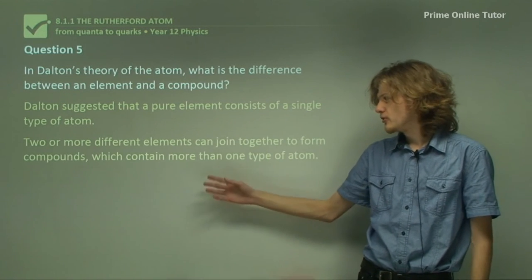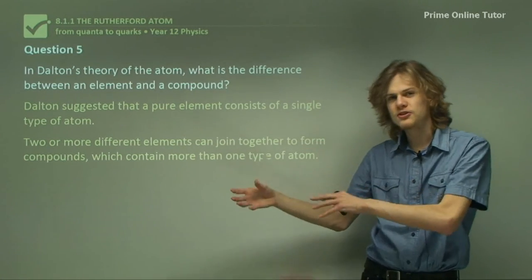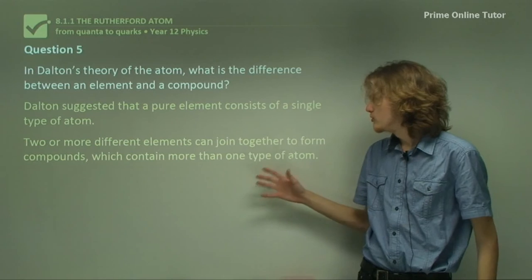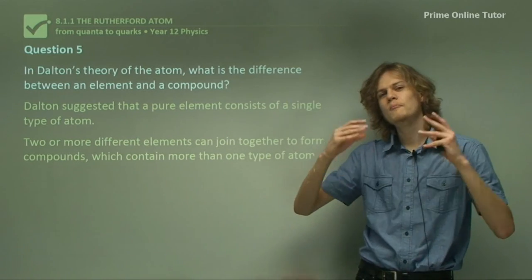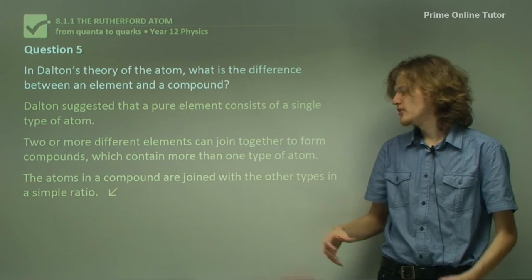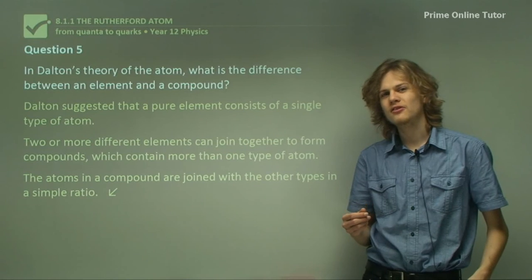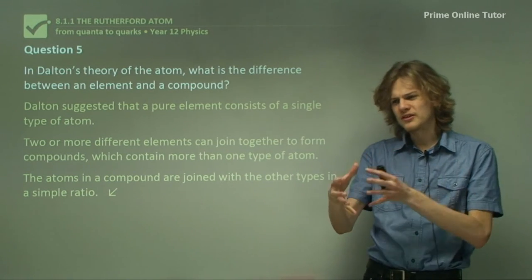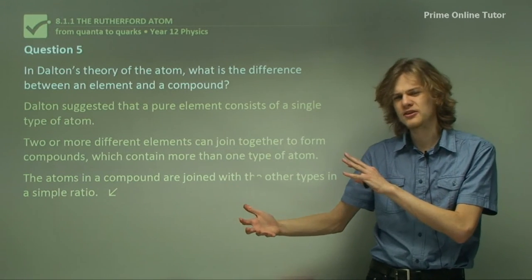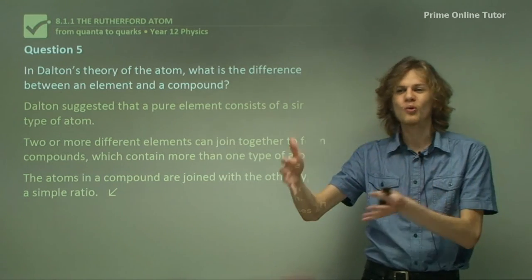So he suggested that two or more different elements can join together, like an atom of oxygen and an atom of nitrogen, to form compounds which have more than one type of atom in them. And so the atoms in a compound are joined together with the other types in simple ratios. So it means rather than having, you know, 127 to 129 as the ratio, it's more likely that they're joined in a one-to-one ratio.